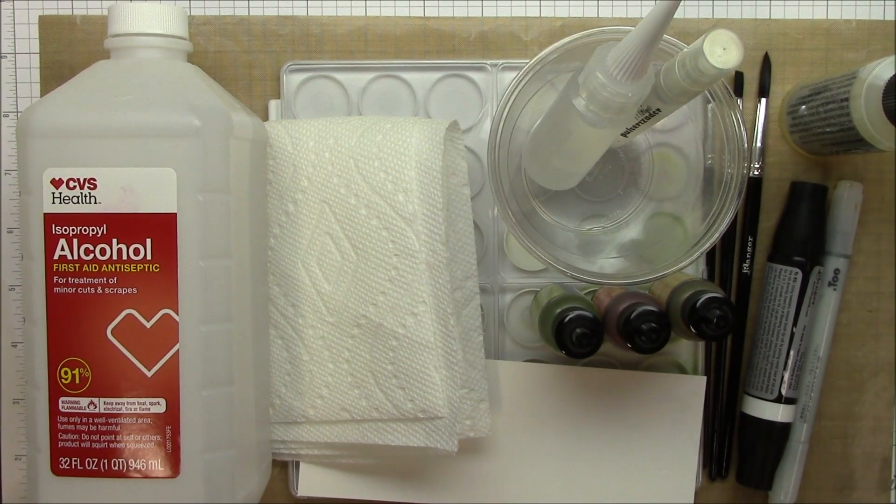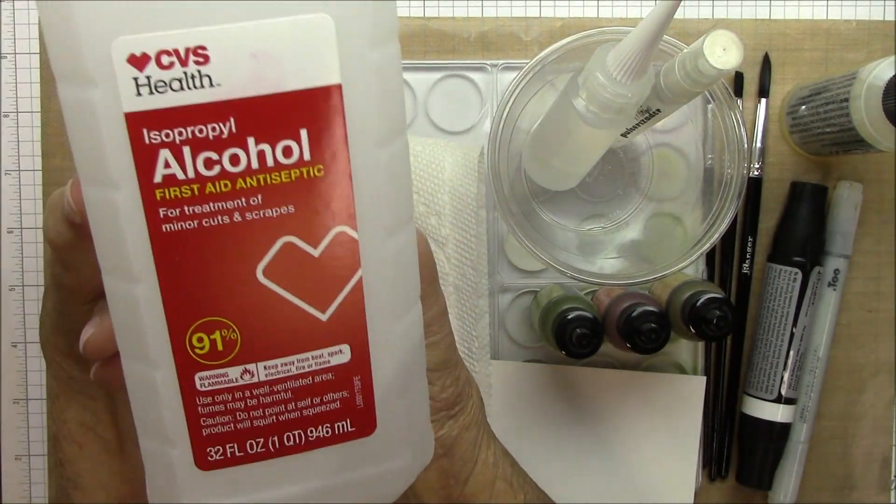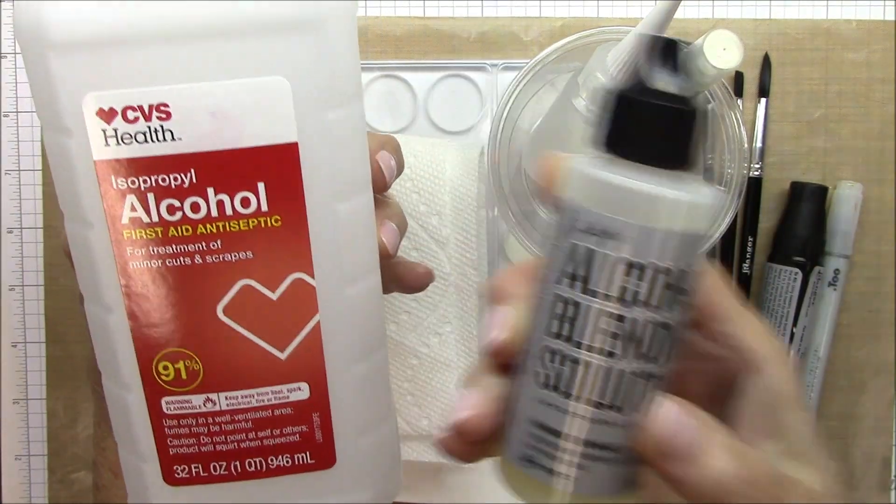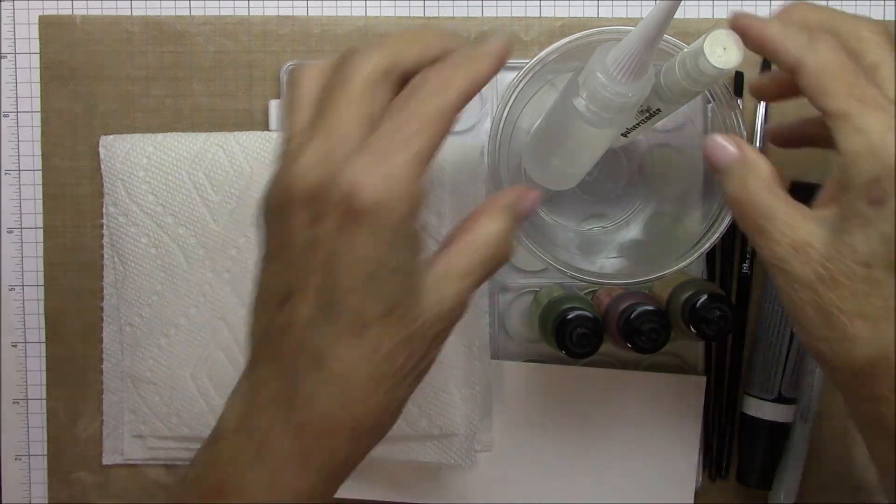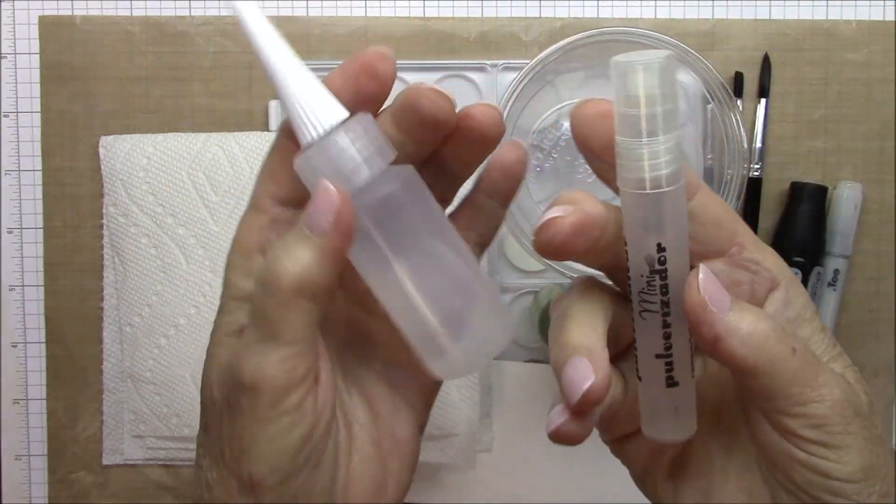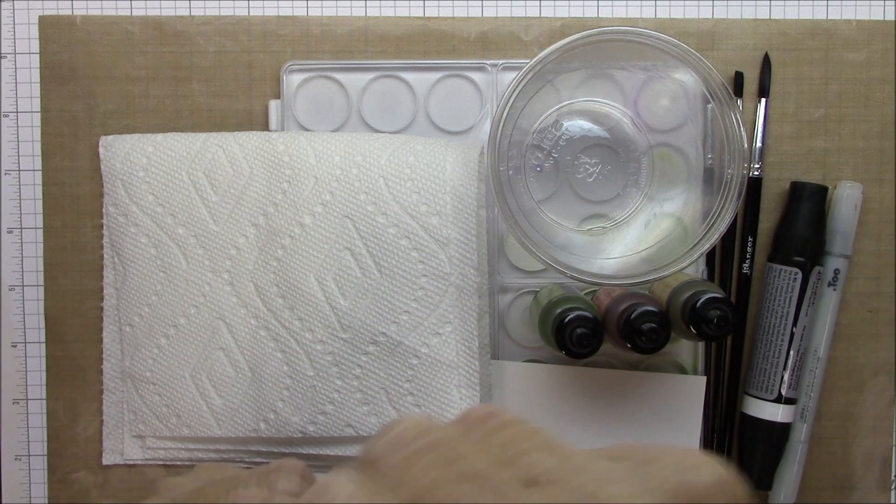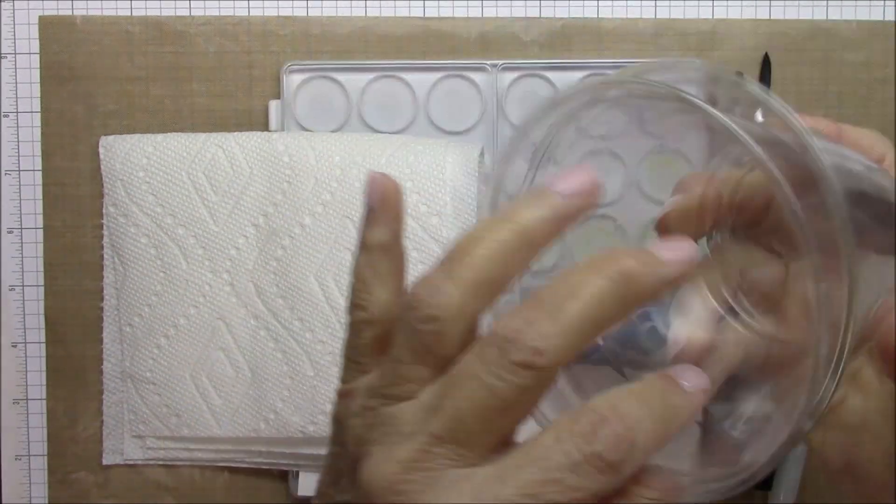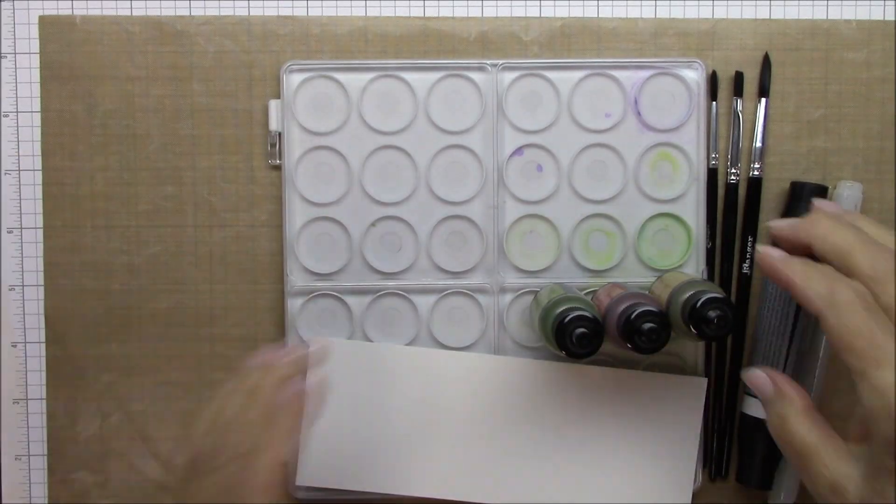So today I'm going to show you exactly how I did this background. When I start, I get all my supplies together. I use a lot of 91% alcohol. I use some blending solution but not a lot. I like to have my alcohol in different ways to apply it, so you will see several little containers here.